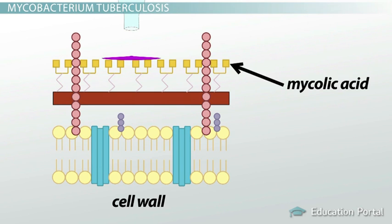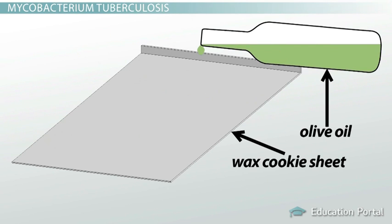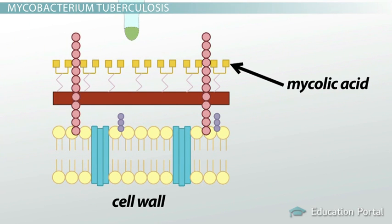You can basically think of the mycolic acid as a type of wax coating applied to the cell wall of Mycobacterium tuberculosis. If you were to take a little drop of olive oil and put it on a wax cookie sheet, the oil would slide right off — it wouldn't be absorbed. Likewise, many stains would slide right off of this bacterium in a very similar fashion.